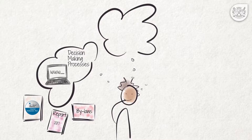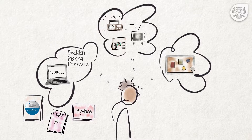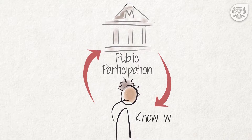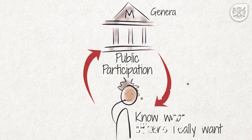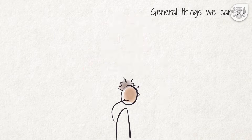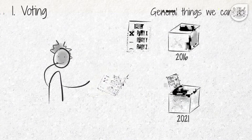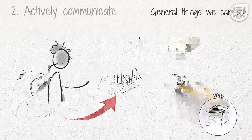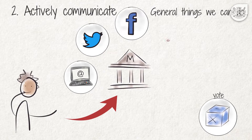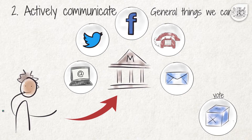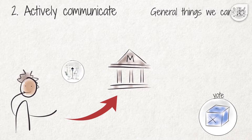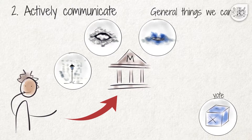All related information should also be available through the local media and on the notice board of the municipality. It is only through our participation that the municipality can know and respond to what we as citizens really want. But there are also some general things we can and should do to be responsive citizens. Firstly, if our municipal councillors do not perform or fulfill their election promises, we can vote for a different person or a different party in the following local government election. Secondly, we should actively communicate with our local municipality by email, through social media, telephone or a letter to make our real needs, concerns and priorities known. For example, we should inform our municipality when street lights are not working, when there are potholes in the road, when a water pipe has burst or when there are illegal electricity connections, and request our municipality to address these issues.